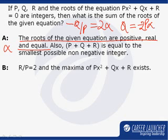Similarly, if I talk about the product of the roots, which is nothing but R by P, it has to be equal to alpha square, which implies that R has to be equal to P alpha square.